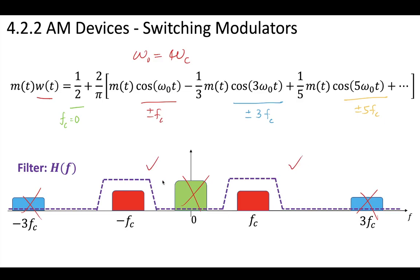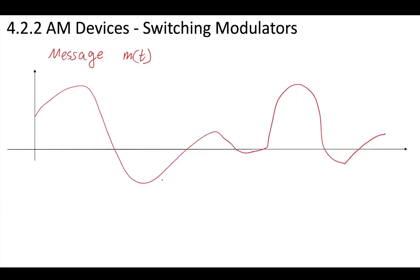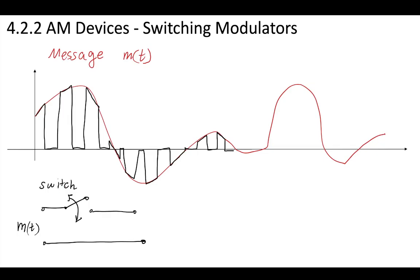Let's think about this a bit more in the time domain. Imagine you have a message m(t) and you have a switch. So your message is on the left side and you have a switch turning on and off with our message. Let's say the switch rate is at our carrier frequency. Now this means that we have our message turning on and off. Sometimes the message is on and sometimes it's off, and we're doing this switching really rapidly at our carrier frequency.